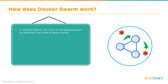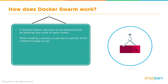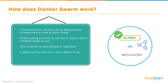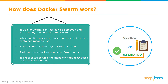Once you've created the Swarm, any services you create can be accessed by any node of the same cluster. When creating a new service, you must specify the container image to use — either through a centralized Docker Hub or your own private Docker Hub. You can set up commands and services to be either global or replicated: a global service runs consistently on every node in the Swarm, whereas a replicated service pushes functionality to only specific worker nodes.